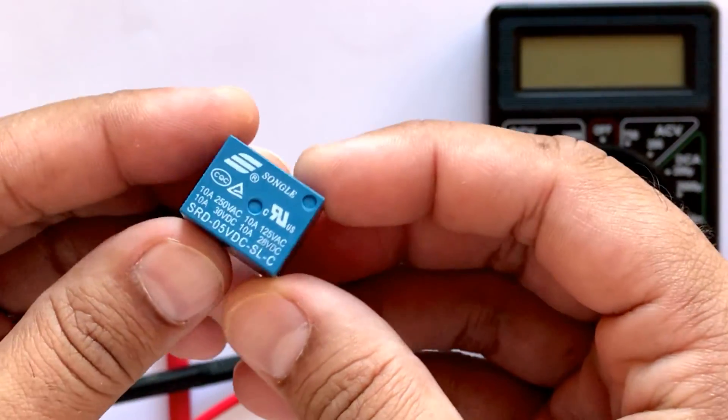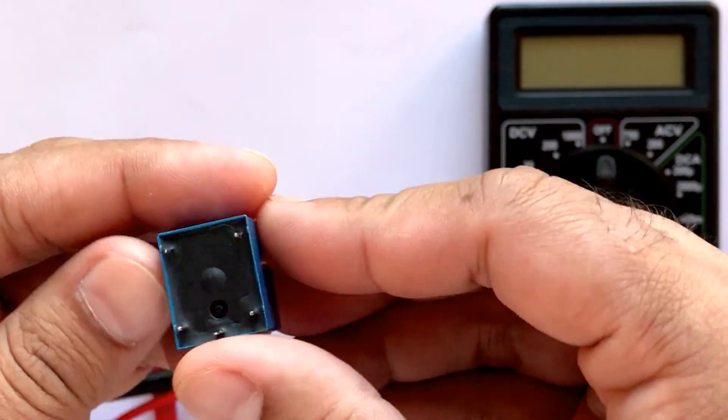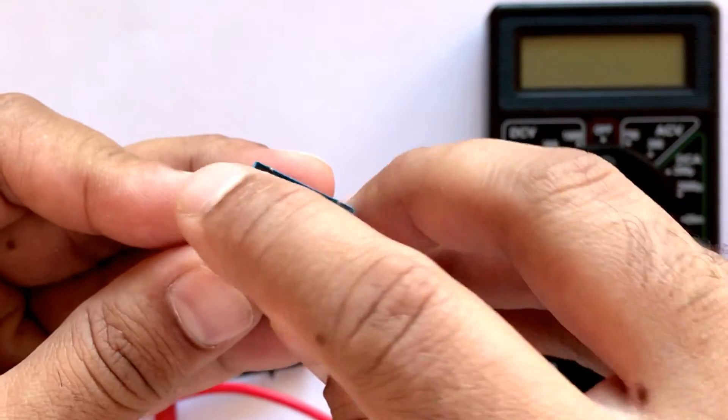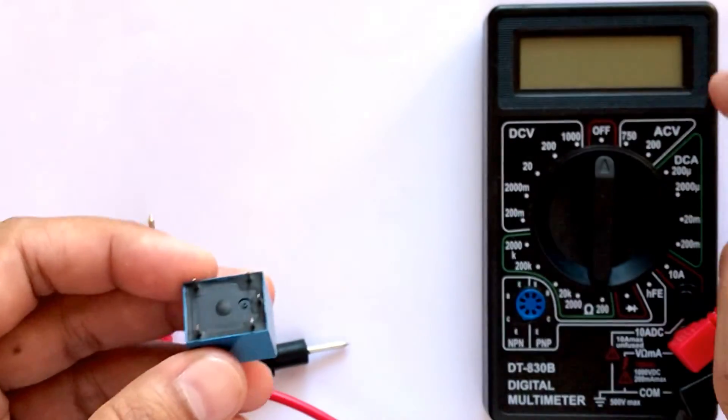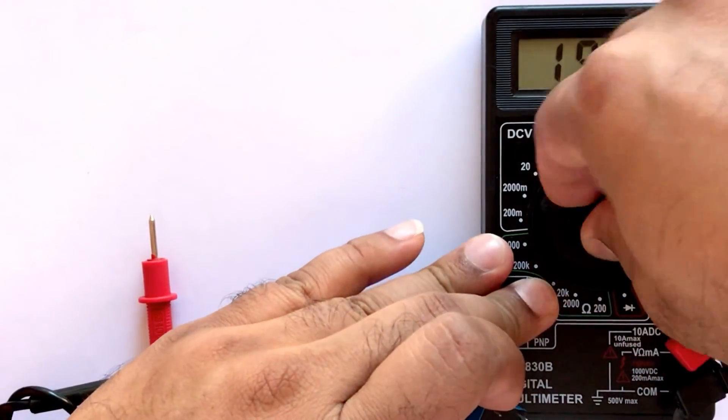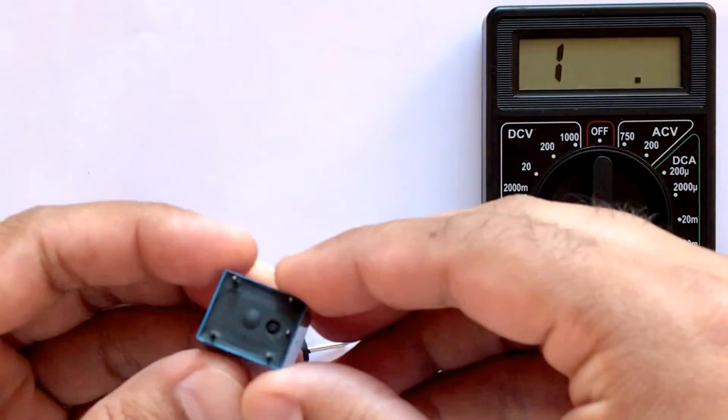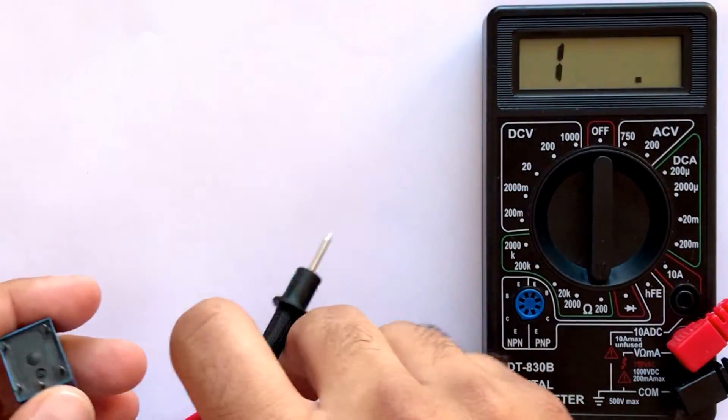If you ever get confused in figuring out which one is normally open and which one is normally closed pin, follow the steps below to easily find it out. Set the multimeter to resistance measuring mode. Turn the relay upside down to see the pins located at the bottom part.